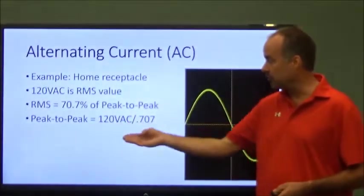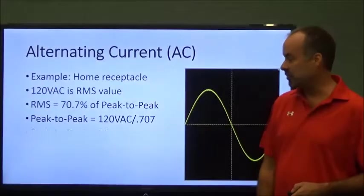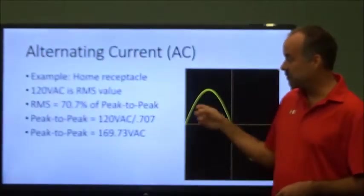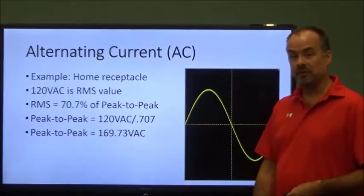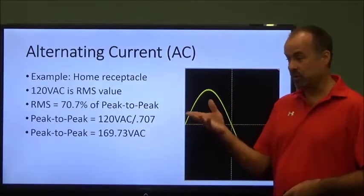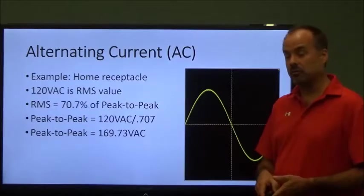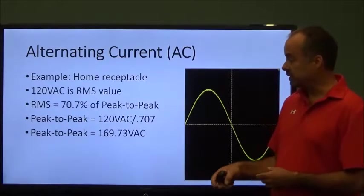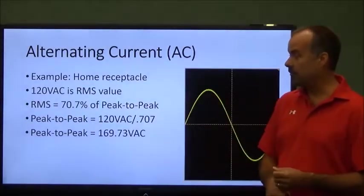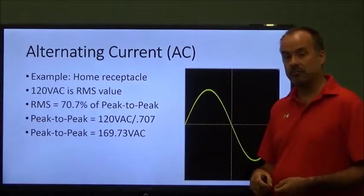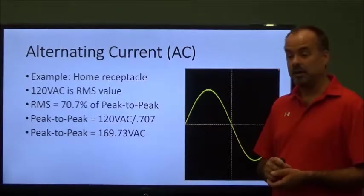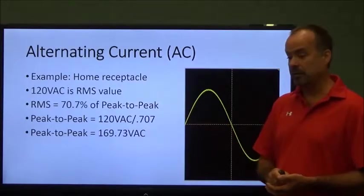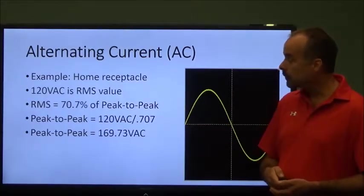I'll take 120 volts divided by .707 and that gives me my peak-to-peak voltage as 169 or almost 170 volts AC peak-to-peak on a receptacle when you're only measuring 120 volts. I just kind of wanted to provide a little bit of background on this for those of you that have not taken AIT-1002 or you're taking it now and maybe you haven't got to this point in the class.